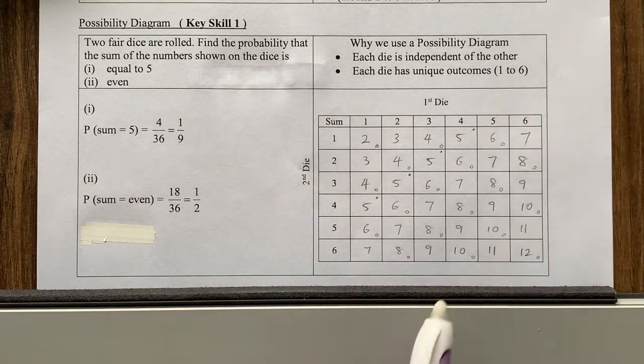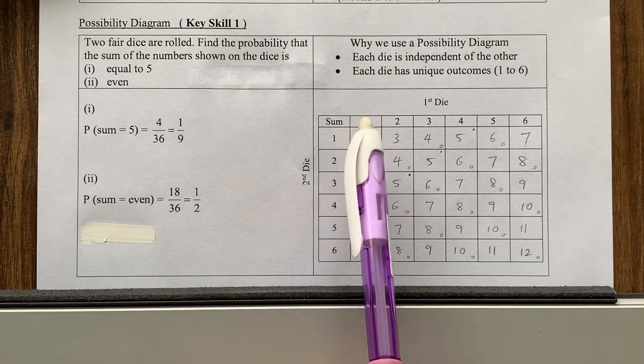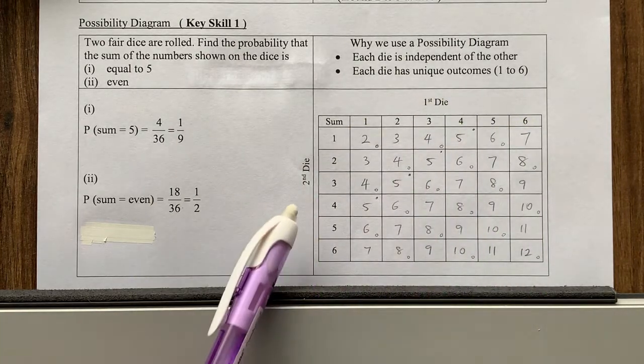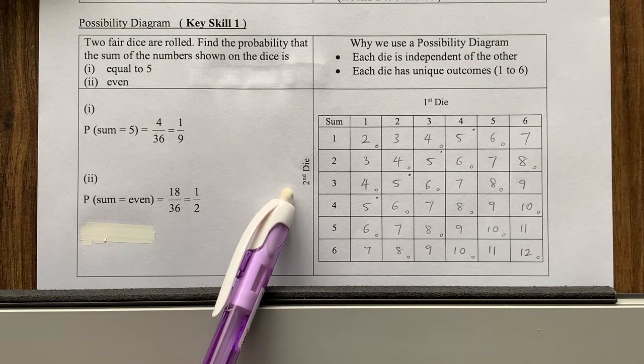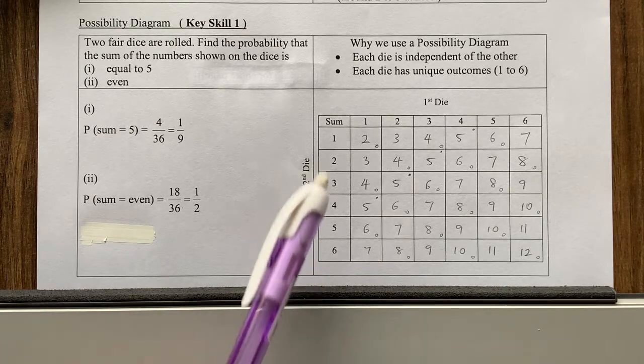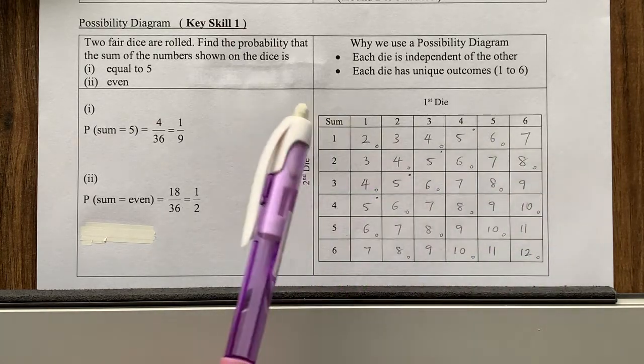So you will see that in our possibility diagram here, I have one labelled one to six. This is the first die, and then I have a second die here. In this case, it's also one to six because it happens to be a dice also. So these are the possible numbers for each dice.